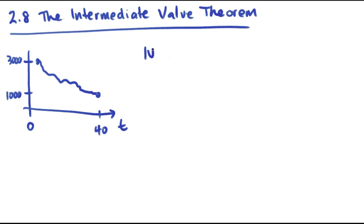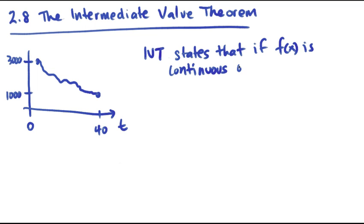Okay, the Intermediate Value Theorem or IVT states that if our function is continuous, as our skier was, on a closed interval from A to B, in this case from 0 to 40.